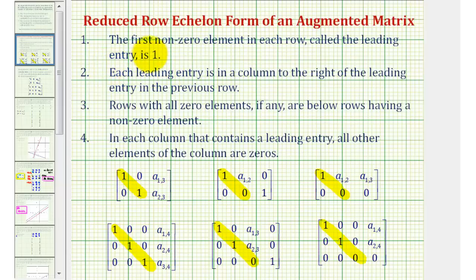Number one: the first non-zero element in each row called the leading entry is 1. Two: each leading entry or one is in a column to the right of the leading entry or one in the previous row. Number three: rows with all zero elements, if any, are below rows having a non-zero element.